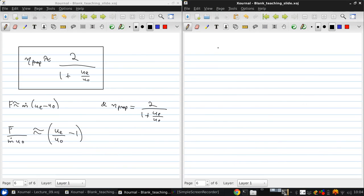Now also note that as f over m dot u0 increases, the engine's size, what I mean by the size is basically the frontal area, the area of the inlet, decreases for a given thrust and flight speed.